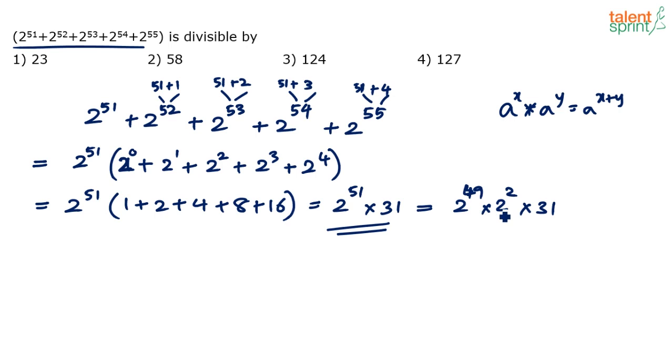Bases are equal and in multiplication form so powers can be added. 49 plus 2 is 51, so we have not changed anything. We have just split as 2 power 49 into 2 power 2 into 31.